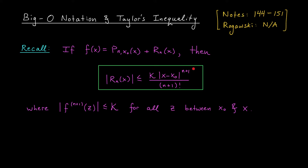Now let's take a step back and have another look at this inequality. Does this remind you of anything, maybe from the last lesson? Hopefully it does. This should look a lot like the definition of big O. So, what this inequality is saying is that this remainder term r_n of x is bounded by a constant times the absolute value of x minus x naught to the n plus 1. It's saying that as x approaches x naught, r_n of x is big O of x minus x naught to the n plus 1.